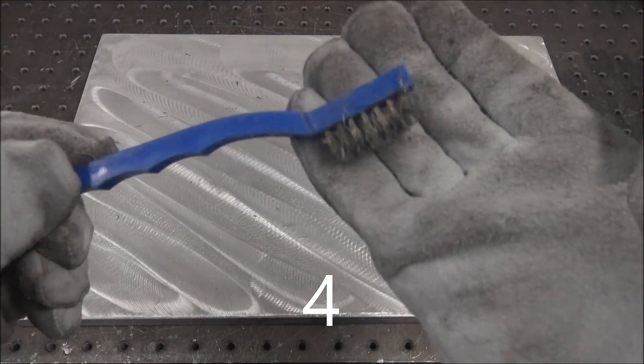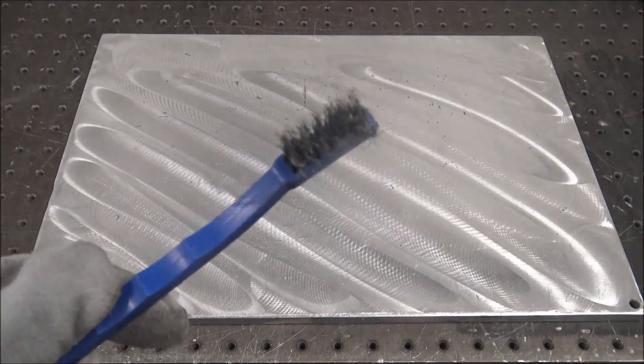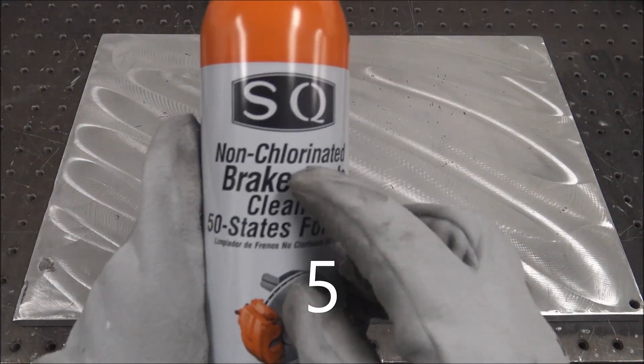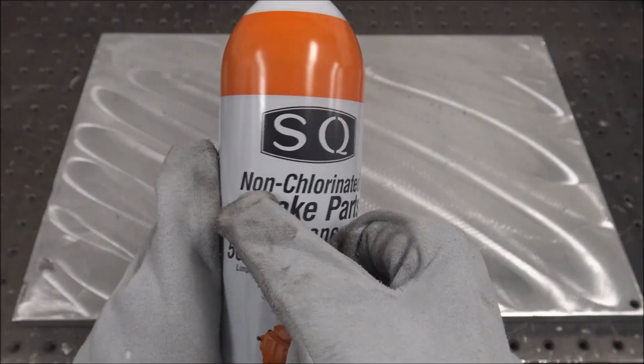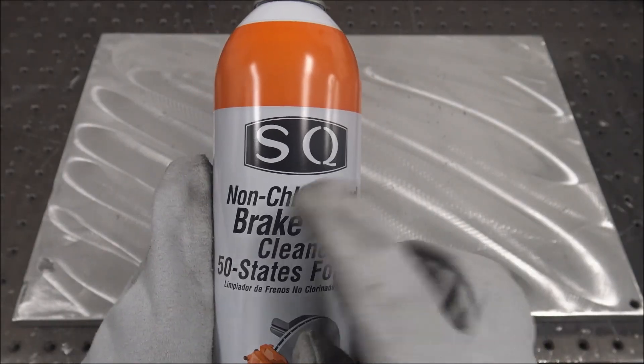Dedicated stainless steel wire brush for cleaning aluminum—don't use it for anything else other than aluminum. Acetone or non-chlorinated brake cleaner to clean your parts. Very important: if you're using brake cleaner, it's non-chlorinated.